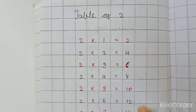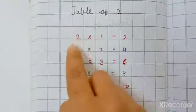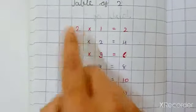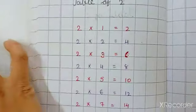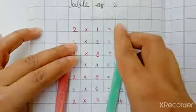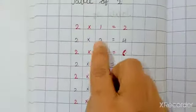Next is table of two. Two ones are two. It means two groups of one chalk. So total two. Next is two twos are four.